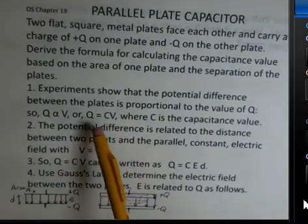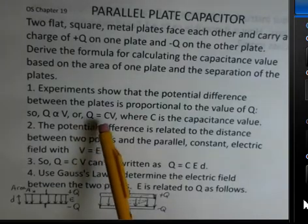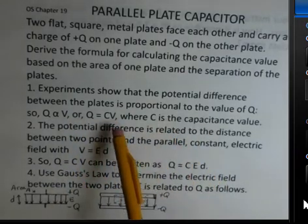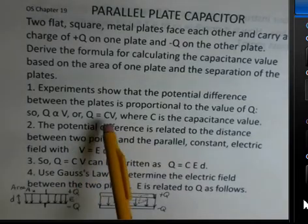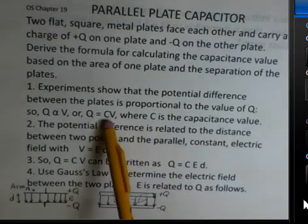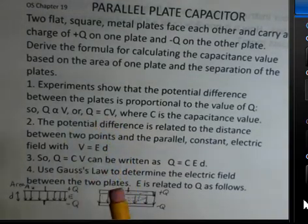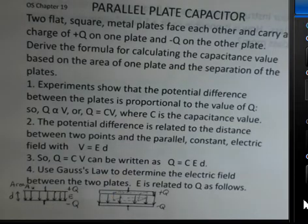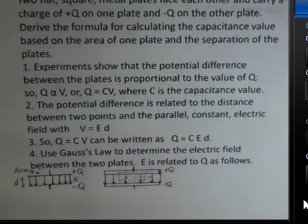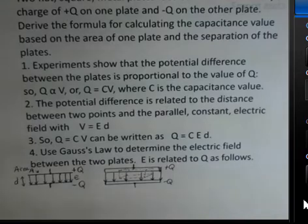C is the constant of proportionality between the charge and the potential difference. We want to determine a way to calculate C that does not use V or Q. So that's a start. The charge is proportional to the potential difference.